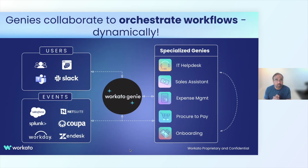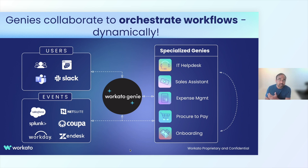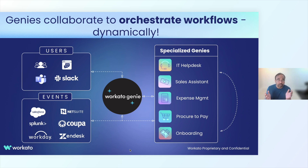One core thing before we get into the demo: there is a new aspect of being able to collaborate with various agents. You can build very purpose-specific agents — say an agent for IT help desk issues, an agent for sales to assist with the lead-to-close process, and an agent for procure to pay. When a question comes in to Workado Genie, which acts as the one-stop shop, it understands the intent and, if it doesn't have the operating instructions to execute it, will bring those specialized Genies into the conversation to execute that specific workflow.